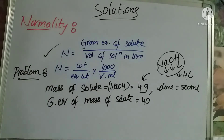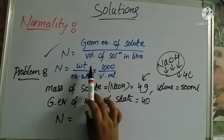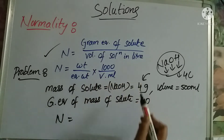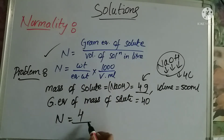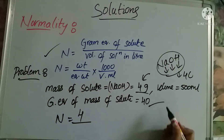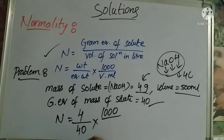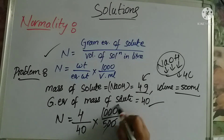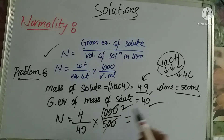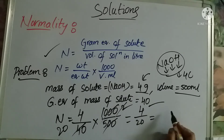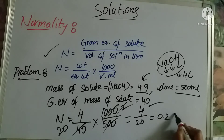Now we substitute into the normality formula. N = weight / equivalent weight × 1000 / volume. Weight is 4 grams, equivalent weight is 40, and the volume is 500 mL. So N = (4/40) × (1000/500) = 4/20 = 1/5 = 0.2 normality.